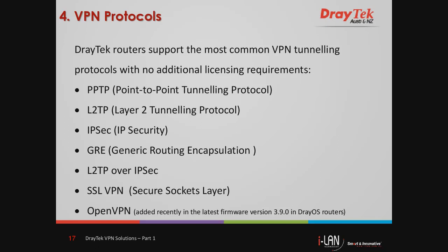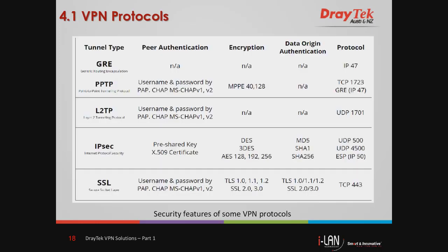DrayTek routers include the most common VPN tunneling protocols with no additional licensing requirements. It's important to note that OpenVPN has been added recently in the latest firmware version 3.9.0 in DrayOS routers. Security features for some of these VPN protocols are shown in this table. At the top we have GRE — generic routing encapsulation — which is the most basic protocol, offering no encryption or peer authentication.